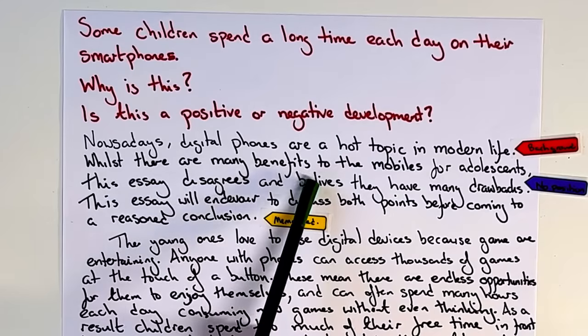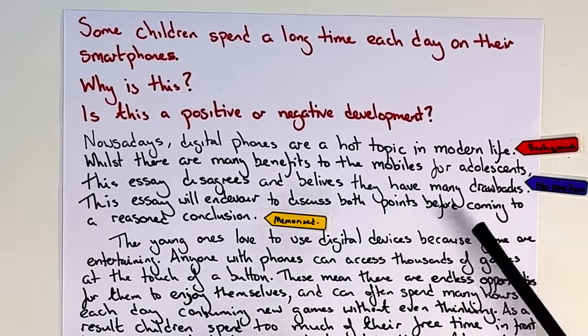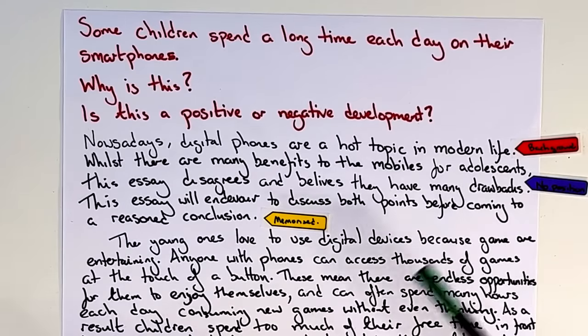So: 'whilst there are many benefits to the mobiles for adolescents, this essay disagrees and believes they have many drawbacks.' This comes from two places. Number one, many students come from countries where in their education system or culture, they are taught not to take strong positions on things. I've taught in Asia a lot — students are taught in school not to take a really firm, strong position. Try to show both sides and sit on the fence a little bit.